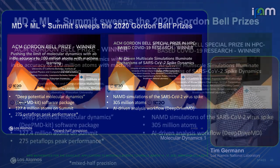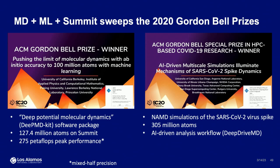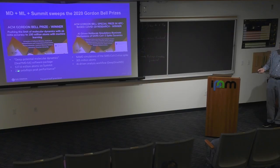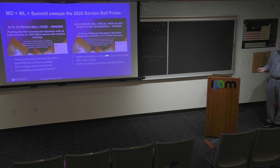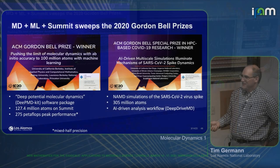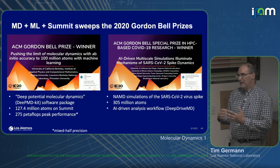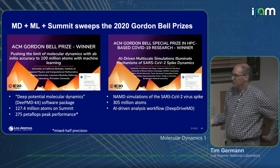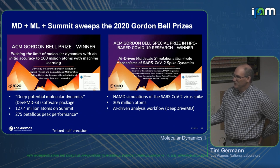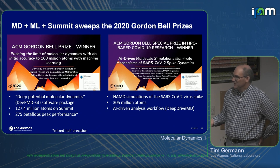A couple years ago, Gordon Bell prizes went to machine learning-based simulations. One was for a deep neural network potential — so-called Deep MD — developed by Princeton and collaborators on Summit, doing millions of atoms with this potential, reaching impressive petaflops levels. For the past few years there has been a special Gordon Bell prize for COVID research; that one involved NAMD simulations of the SARS virus, again hundreds of millions of atoms, with some machine learning aspect — more for the workflow and steering the simulations rather than for the large simulations themselves. Two simulations on Summit, each with some combination of 'deep' and 'MD' in their title — there's obviously something there.